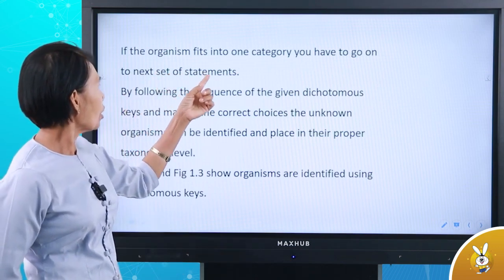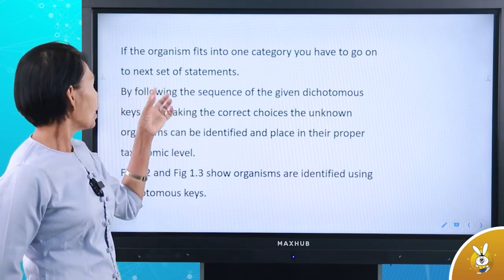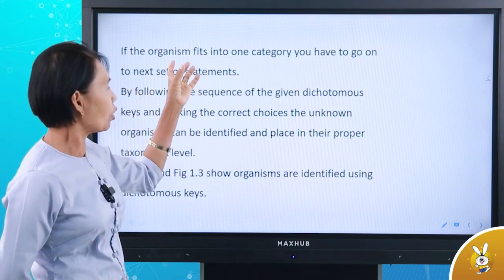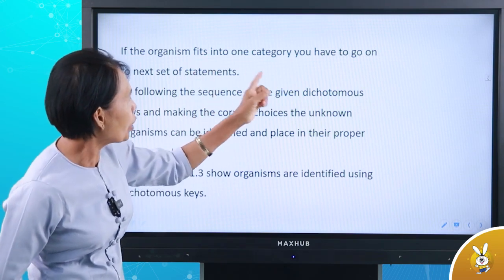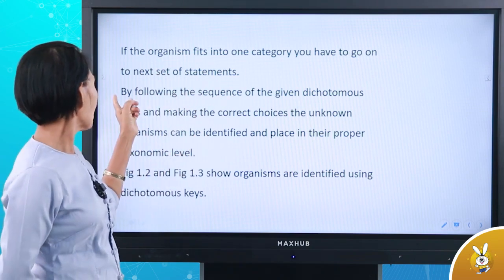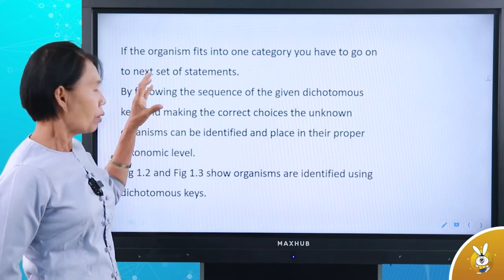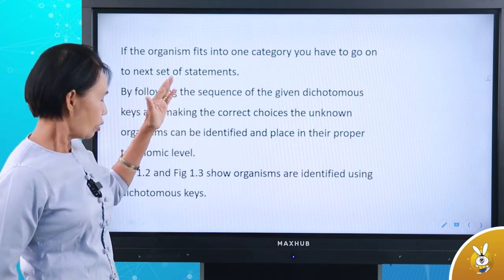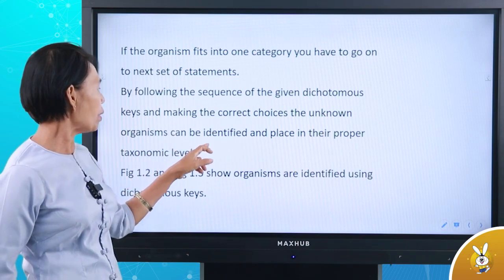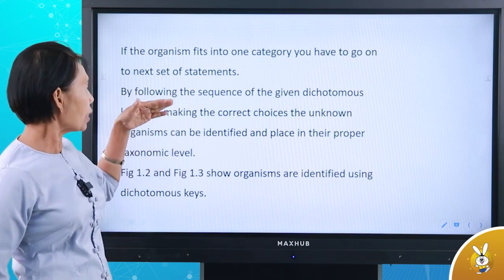If the organism fits into one category, you have to go on to the next set or statement. By following the sequence of the given dichotomous scheme, making the correct choice, the unknown organism can be identified and placed in the proper taxonomic level.